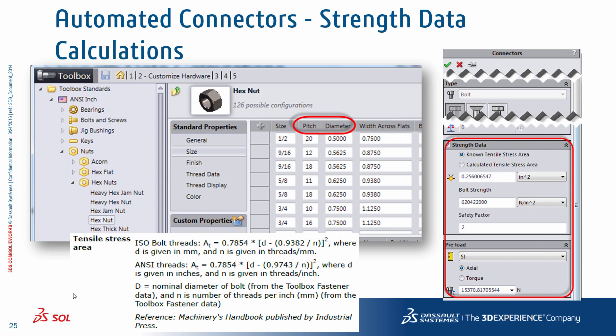One thing to note about this automatic mapping of toolbox data: the tensile stress area is calculated in accordance with the ISO/ANSI bolt threads formula. You can find this information in the SOLIDWORKS Simulation online help. The two key inputs taken from the toolbox library for each bolt connection are the pitch and diameter values.